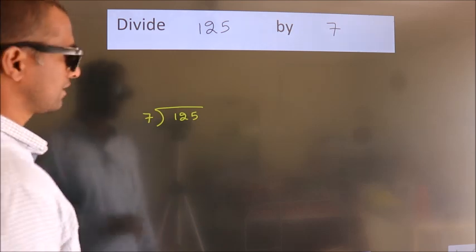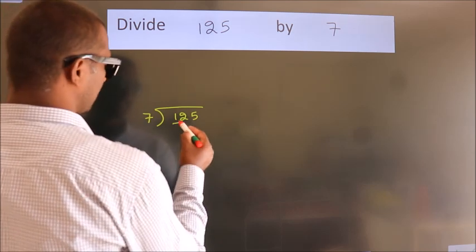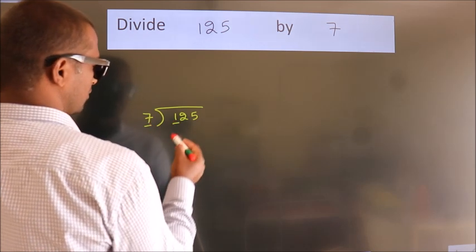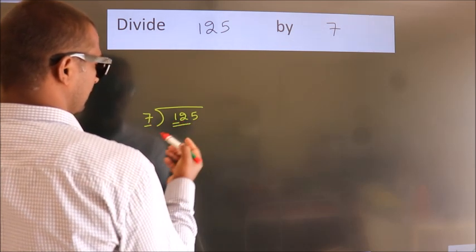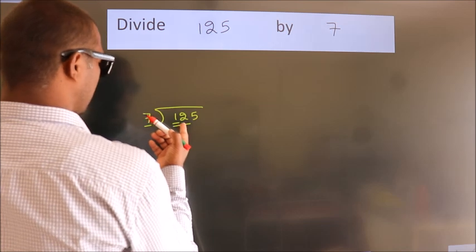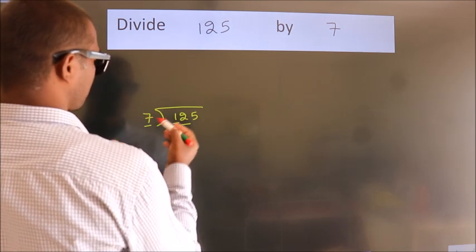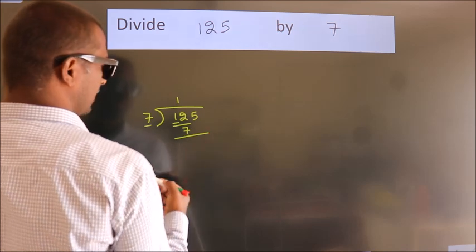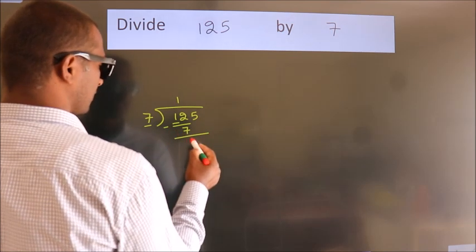Next, here we have 1, here 7. 1 is smaller than 7, so we should take 2 numbers, 12. A number close to 12 in the 7 table is 7 ones, which is 7. Now we should subtract. We get 5.